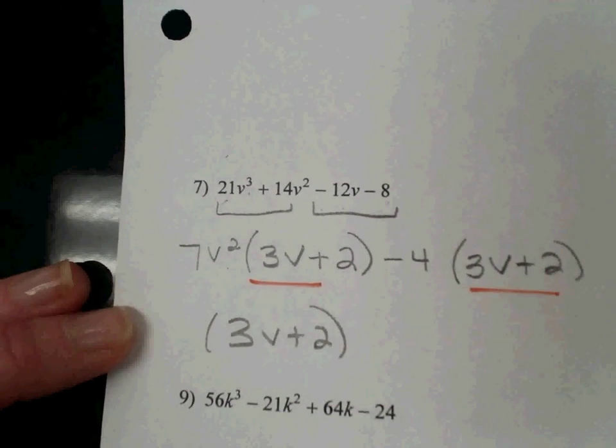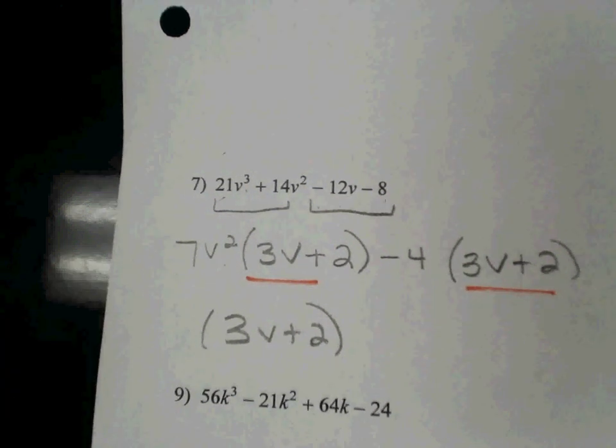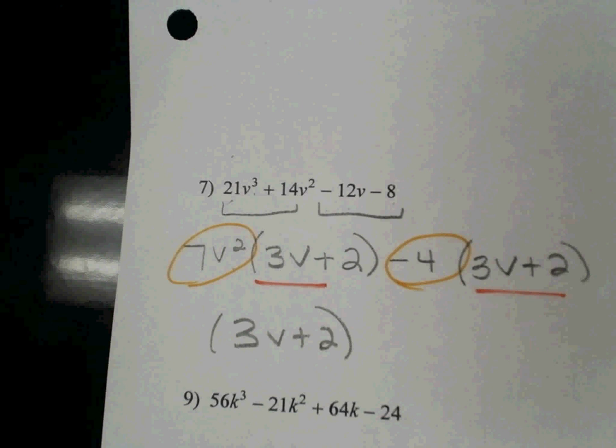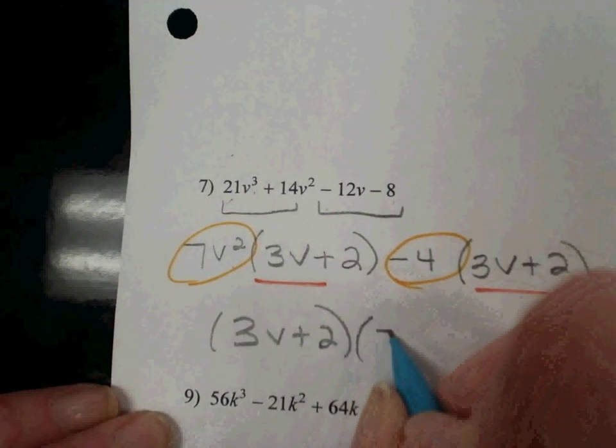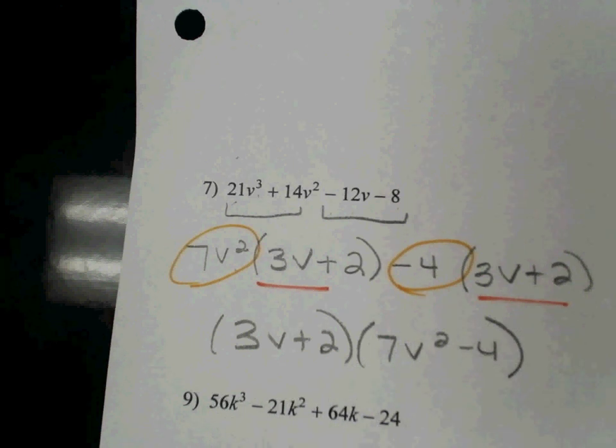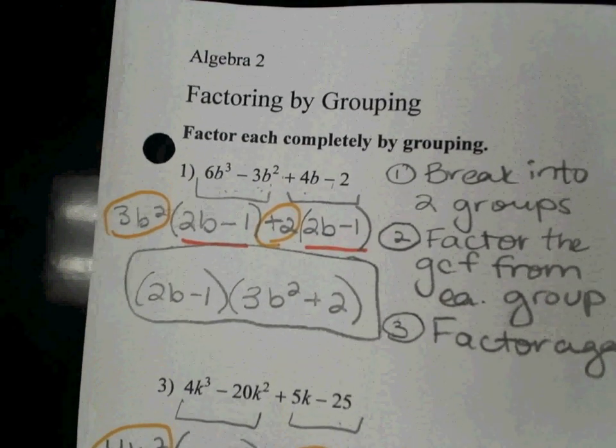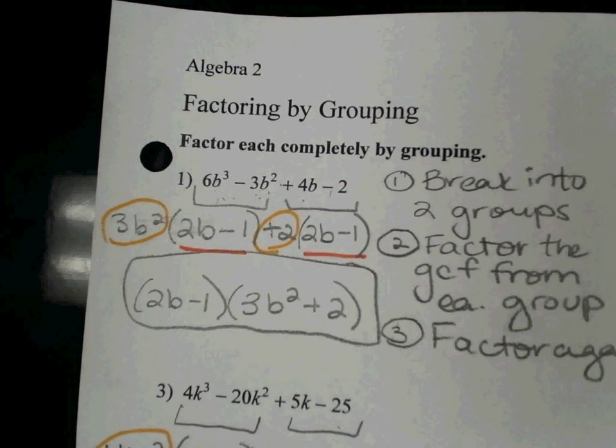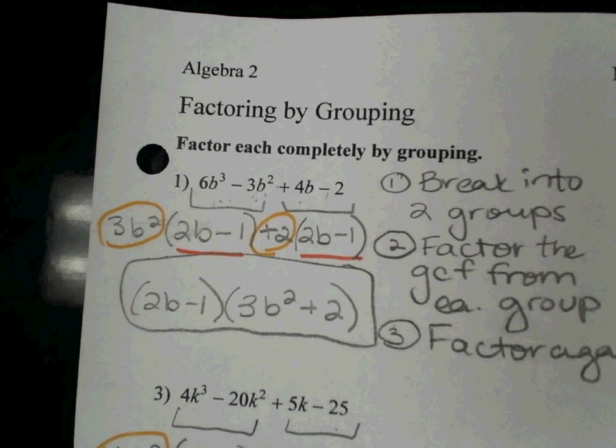3v plus 2 is my group that's in common. And then my leftovers, 7v² and the minus 4, go in that second group. So go ahead and try 5 and 9 just to make sure you know what you're doing.